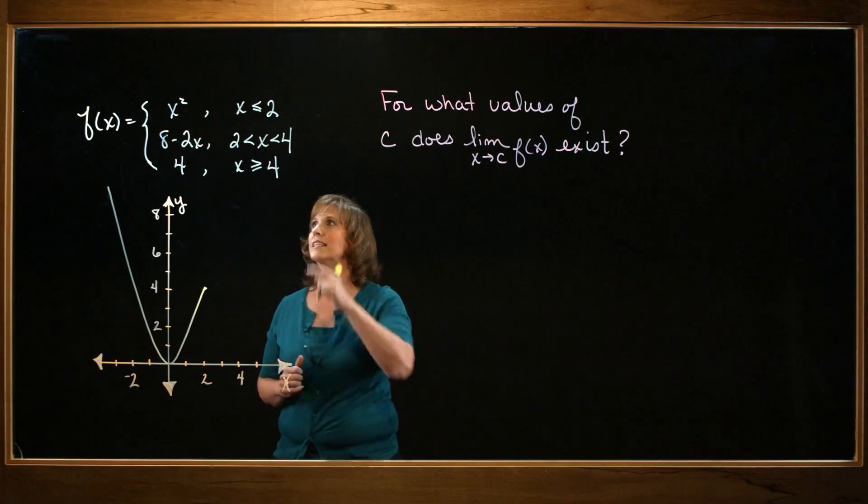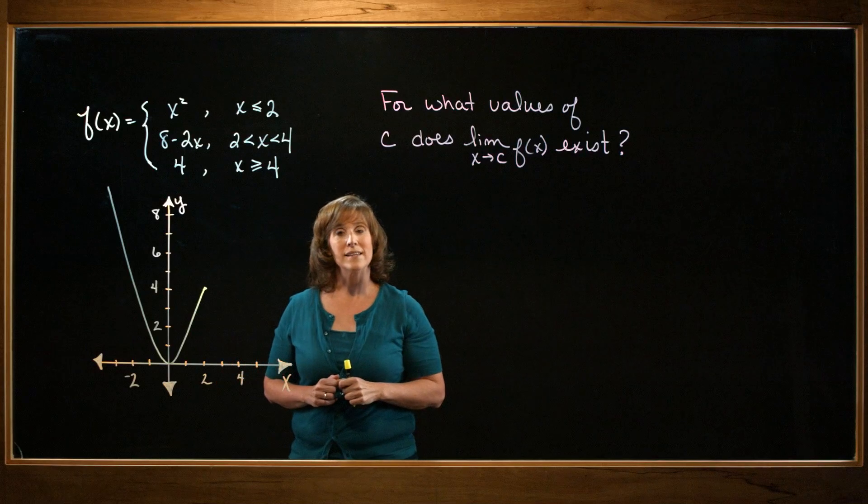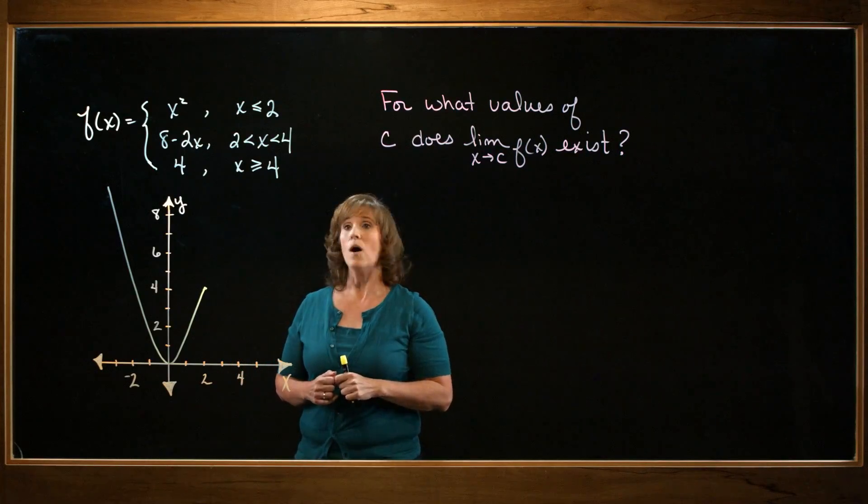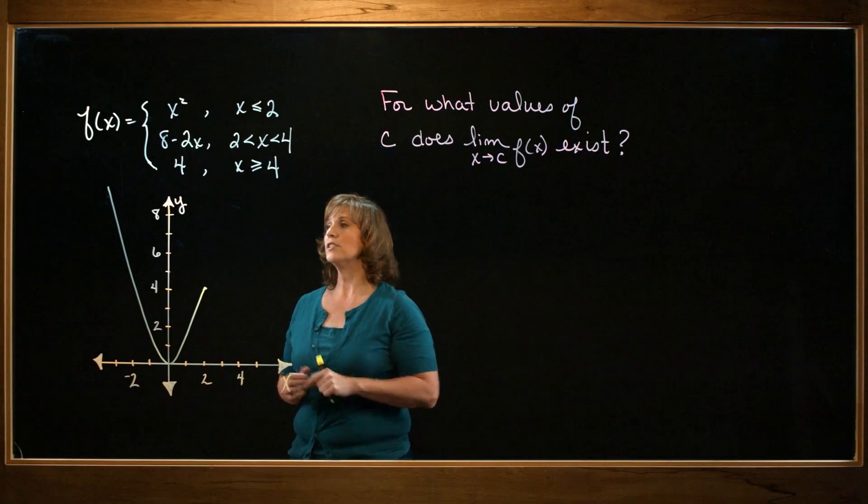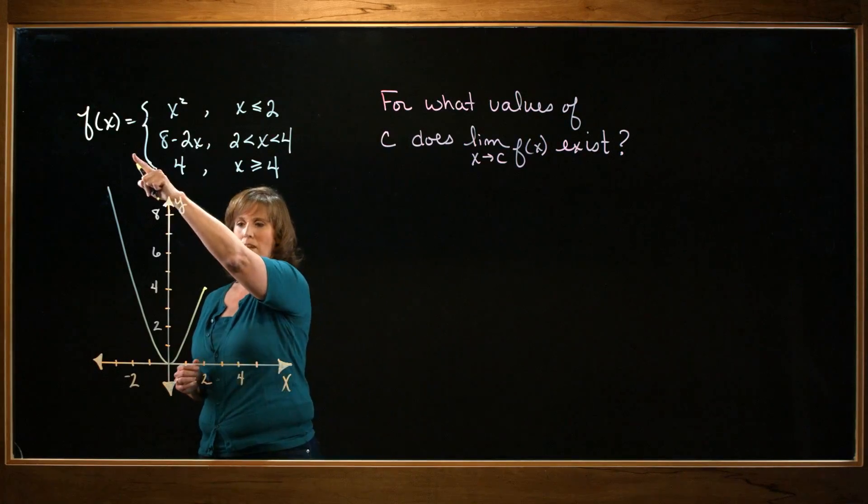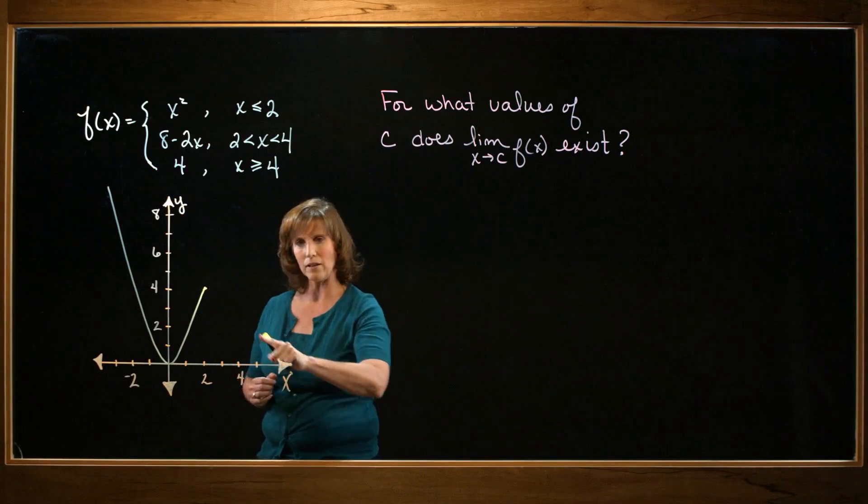Let's go ahead and look at the second tier. I have 8 minus 2x. That's a line with a y-intercept of 8, a slope of negative 2. So here's my y-intercept of 8 and a slope of negative 2. It should come through about like that.